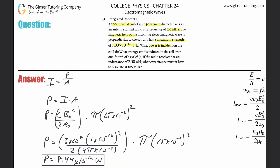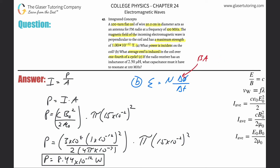Let's look at part B. What average EMF is induced in the coil over one-fourth of a cycle? The formula from a prior chapter is that induced EMF equals the number of turns multiplied by the change in magnetic flux over the change in time. The magnetic flux is the magnetic field times the area times the cosine of the angle. They told us it's perpendicular, so cosine of 90° is just one — we can basically get rid of that.